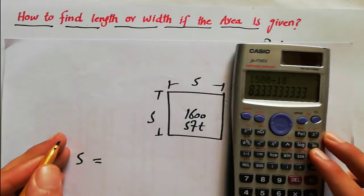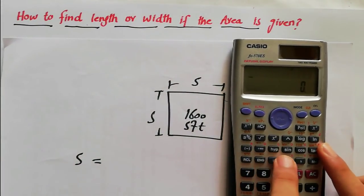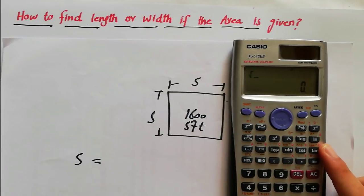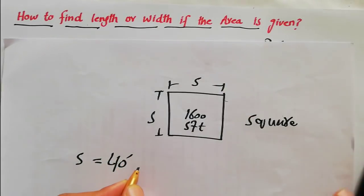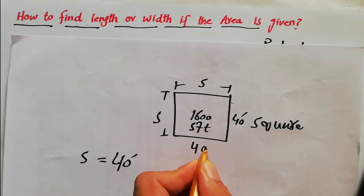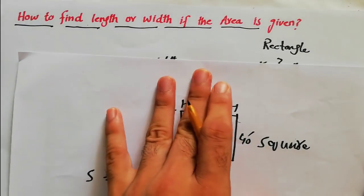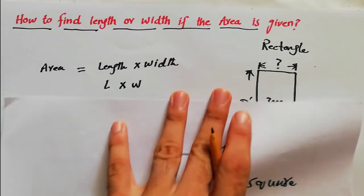Use calculator, so under root 1600 is equal to 40 feet. This side will be 40 and this side will be also 40 feet. This is the easy way to find out length or width if the area is given.